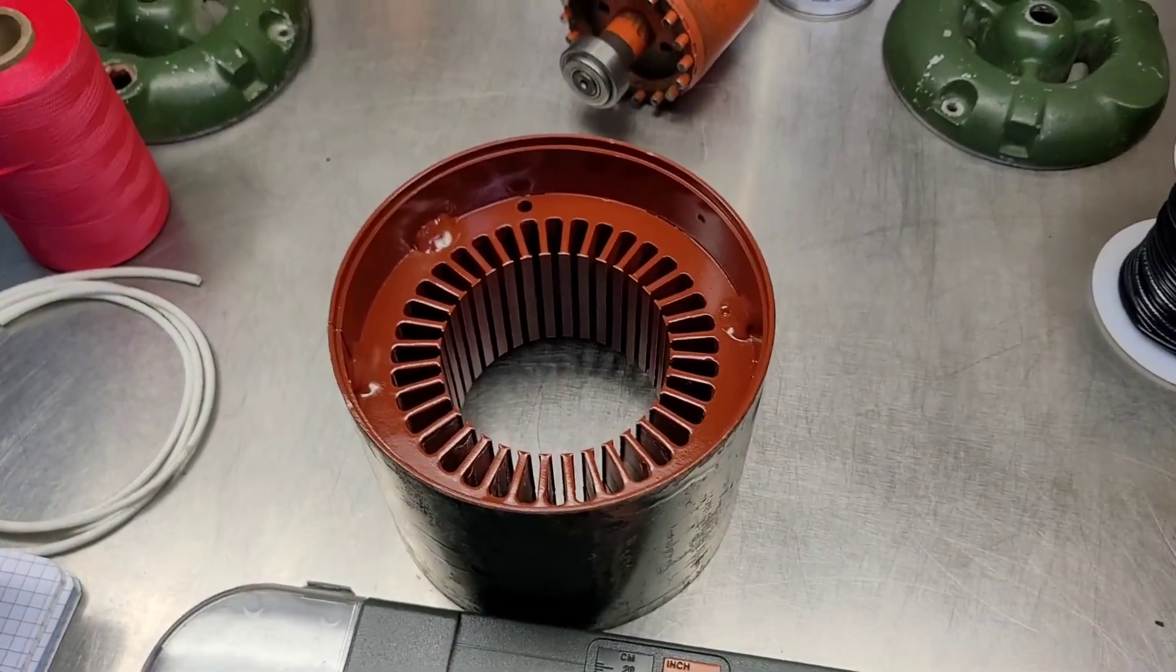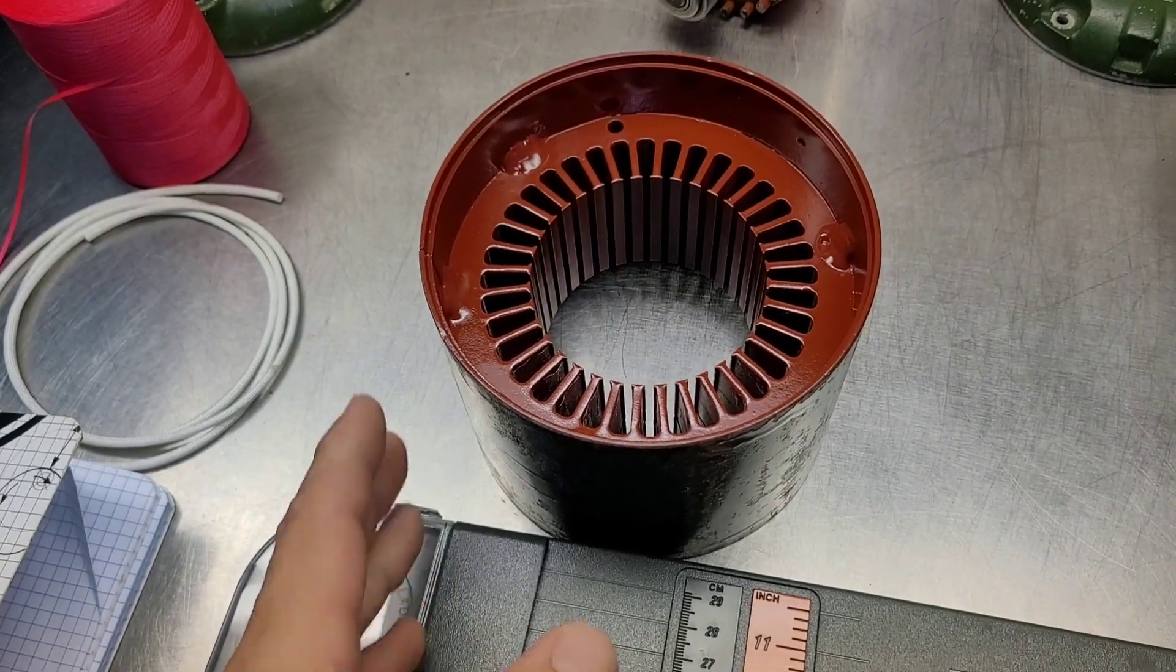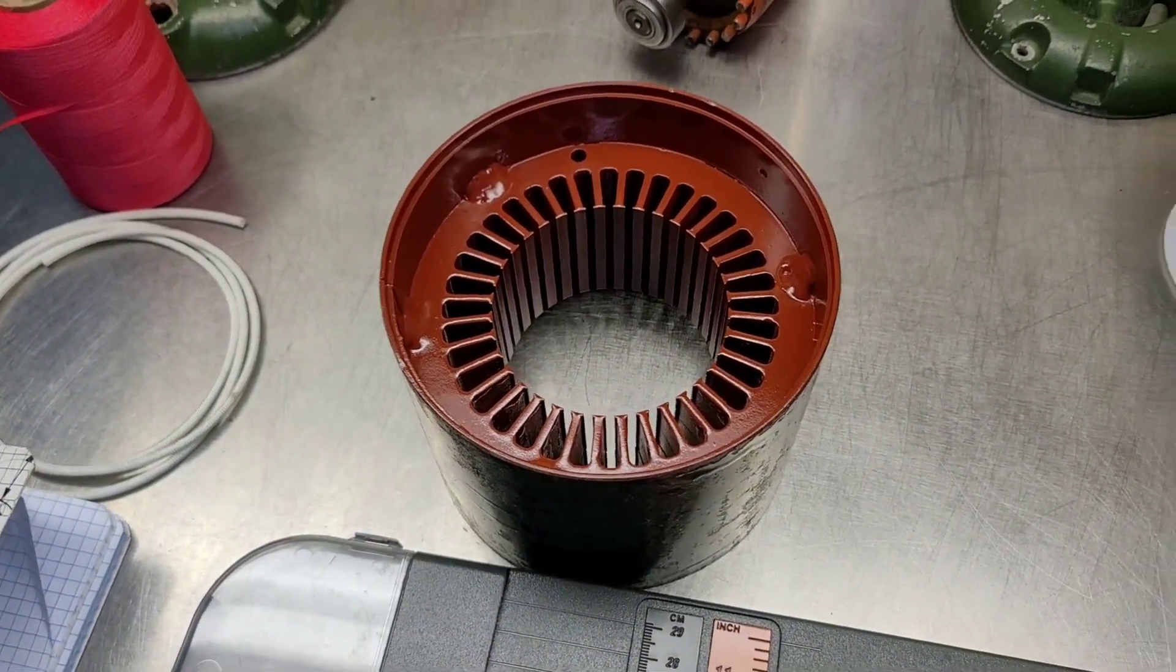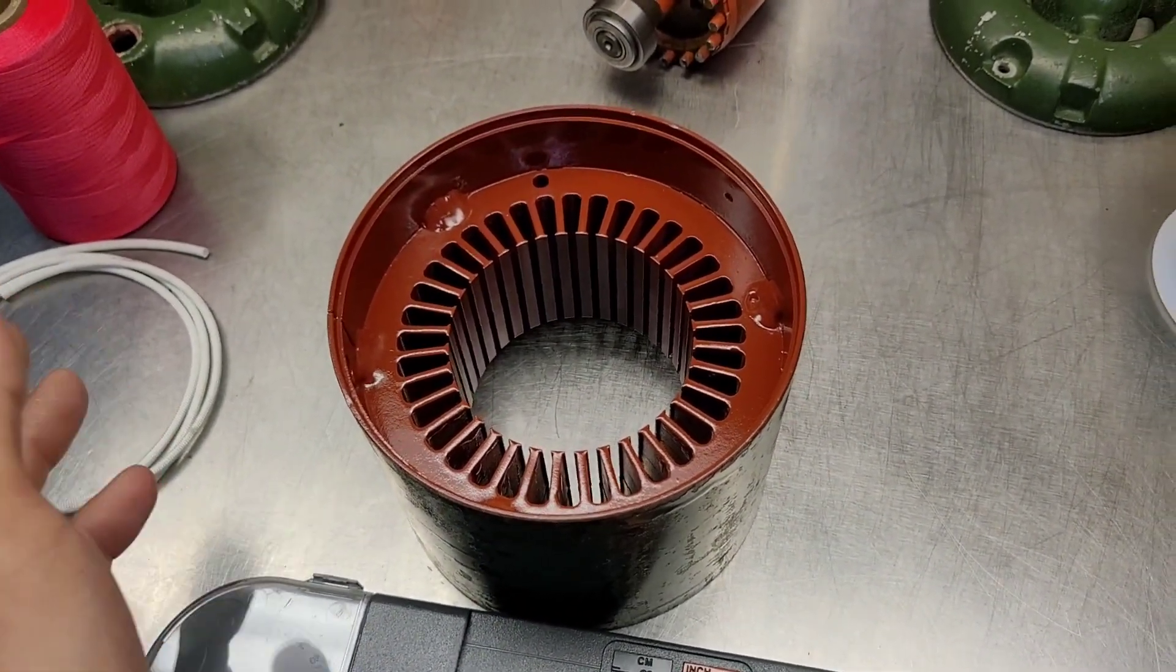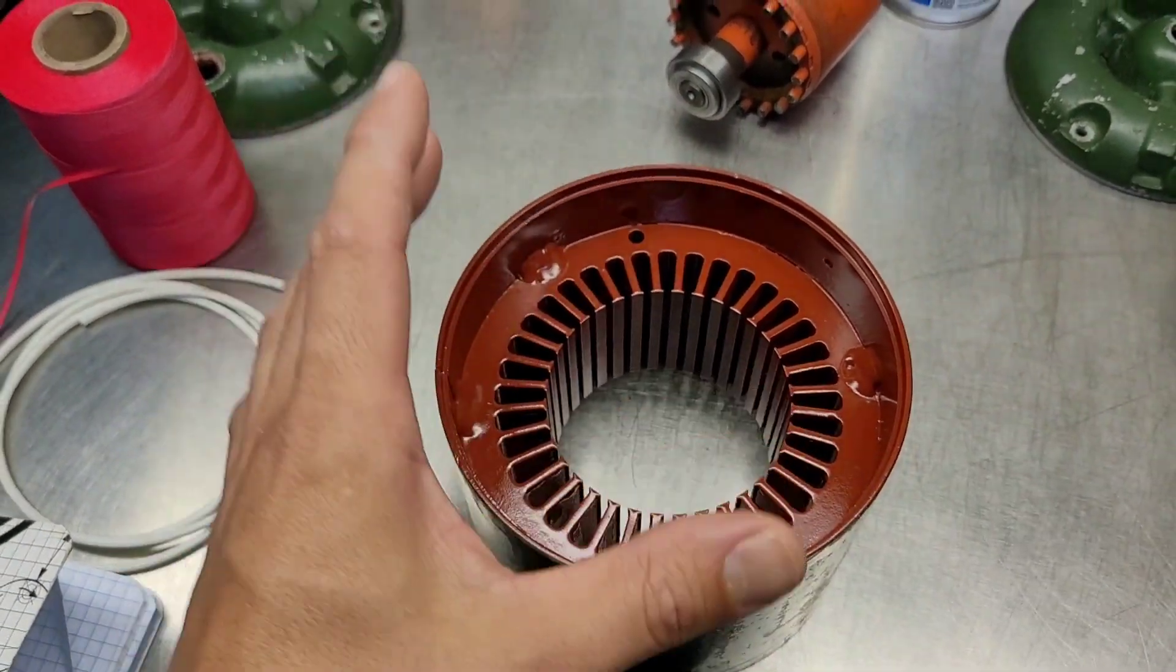Hello YouTube! So in today's video I'm going to be moving right along with this model 163 motor here. As you can see since the last video, I now have the entire stator core, the inside part of it, spray varnished so it's all sealed and bonded together really nicely.